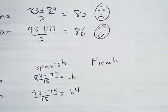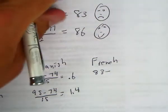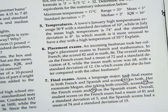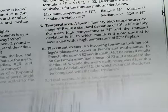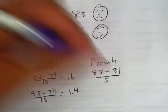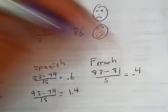And then on the French exam, of course Anna got an 83 on both, but the mean was an 81 with a standard deviation of 5. So that comes out to 0.4.